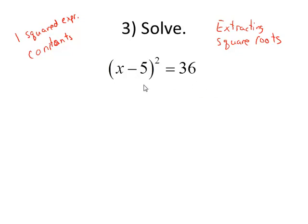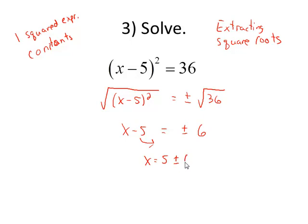So here, this square term is already isolated, so I can take the square root of both sides: the square root of x minus 5 squared and the square root of 36 on the right. Now, when we take the square root of both sides, we're going to use plus or minus in front of the square root of the constant. The square root of the square will just simplify to be x minus 5, and that's going to equal plus or minus 6.